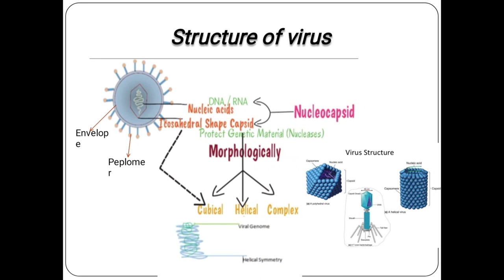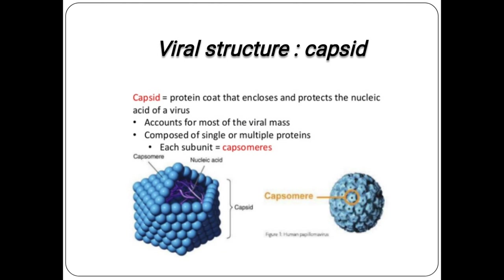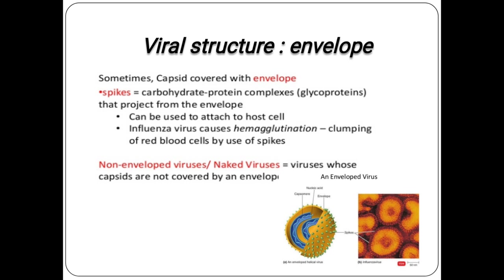Based on morphology, there are three symmetry types: cubical (similar to icosahedral), helical (spiral helical symmetry), and complex (head and tail structure). The capsid is the protein coat that encloses and protects the nucleic acid of the virus. Each subunit of the capsid is called a capsomer.